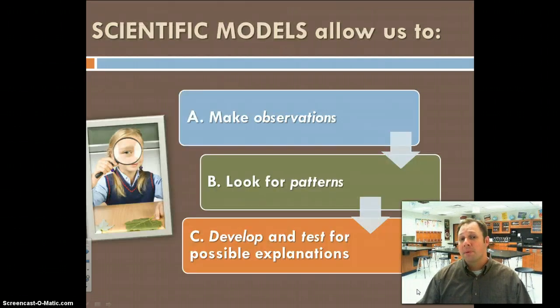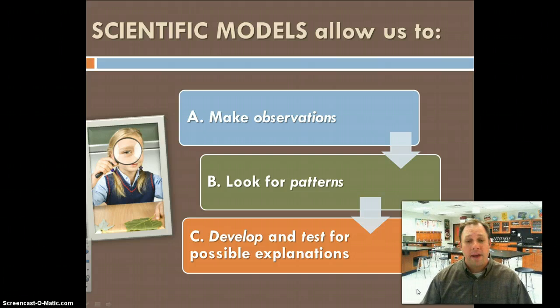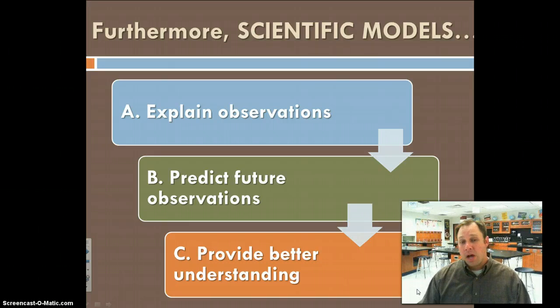So models help us make observations. They help us to look for patterns, develop and test for possible explanations. Using a model, we can look at that model over and over again in a controlled environment versus the real thing, we don't always have that option. Models also help us explain our observations, predict future observations, and also provide for better understanding.